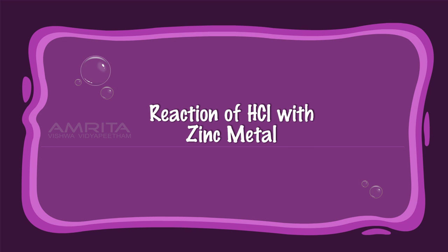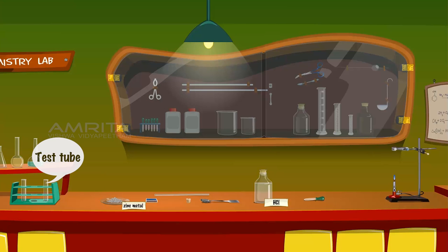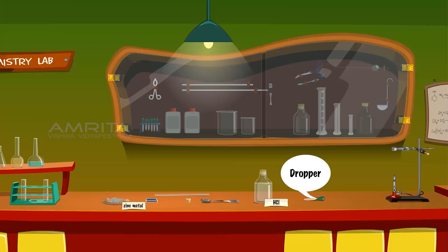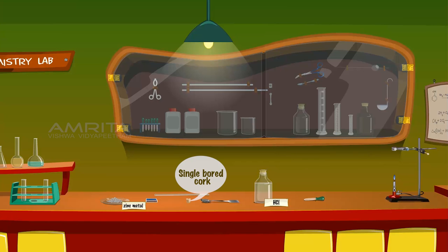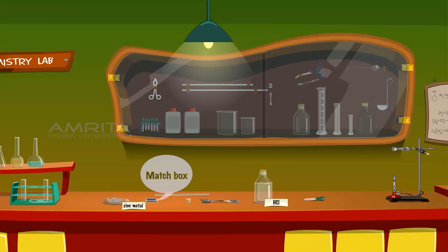Reaction of HCl with Zinc Metal. We require a test tube, a small piece of zinc metal in a dish, a spatula, HCl solution, a dropper, a stand with a clamp, a single board cork, a jet tube, Bunsen burner, and a matchbox.